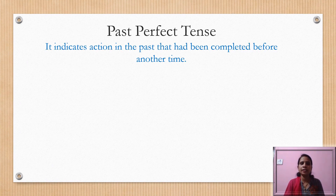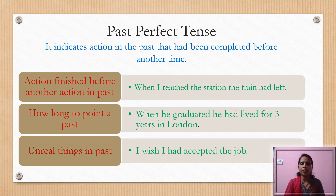Past perfect tense indicates an action in the past that had been completed before another time. Whenever there are two actions, the action which took place earlier is written in past perfect tense. For example, 'When I reached the station, the train had left.' Two actions occurred consecutively, and 'the train had left' took place earlier, so it is written in past perfect tense.